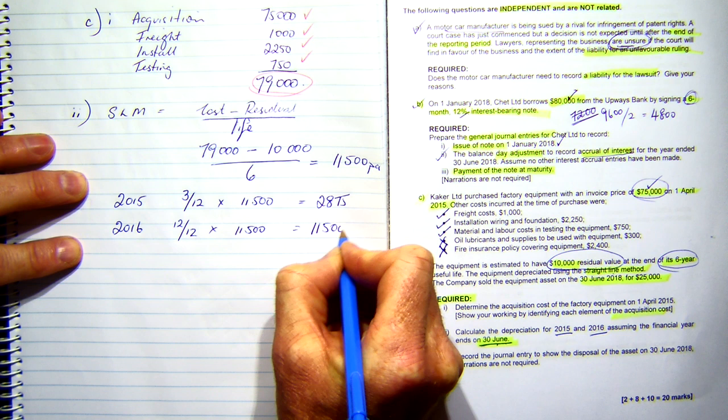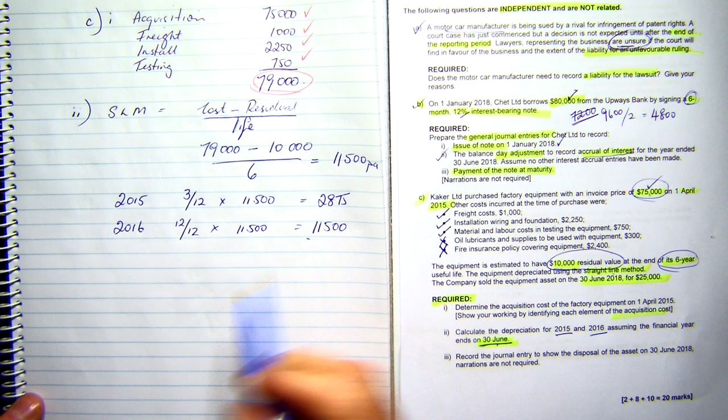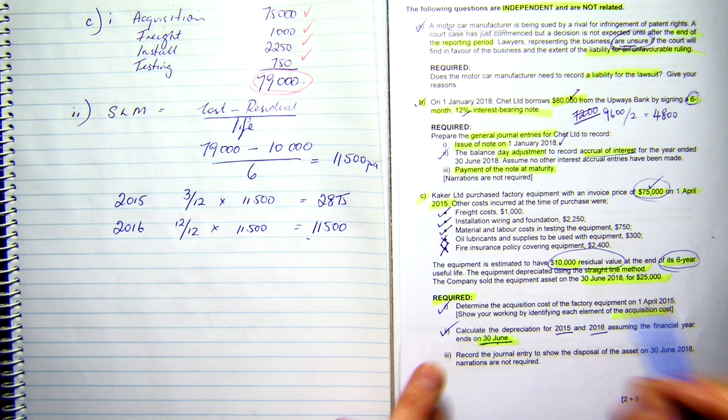And then, in 2016, I got 12 twelfths times 11,500, which equals 11,500. I just do 12 twelfths just because I'm working it out. So, that makes my depreciation for those two years. That answers that question there.